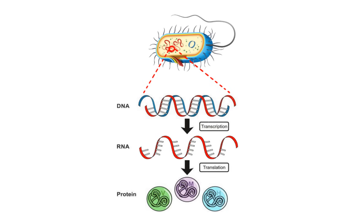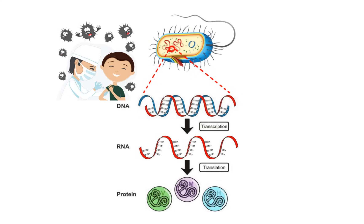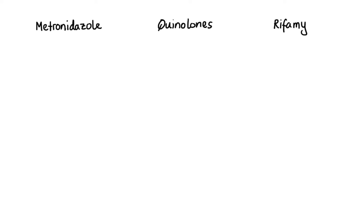But wouldn't that be toxic to our own body cells? Luckily for us, bacterial enzymes that carry out synthesis of DNA and RNA happen to be different from ours, thus allowing development of selectively toxic antibiotics. The antimicrobial agents that primarily target nucleic acid synthesis include metronidazole, quinolones, and rifamycins.